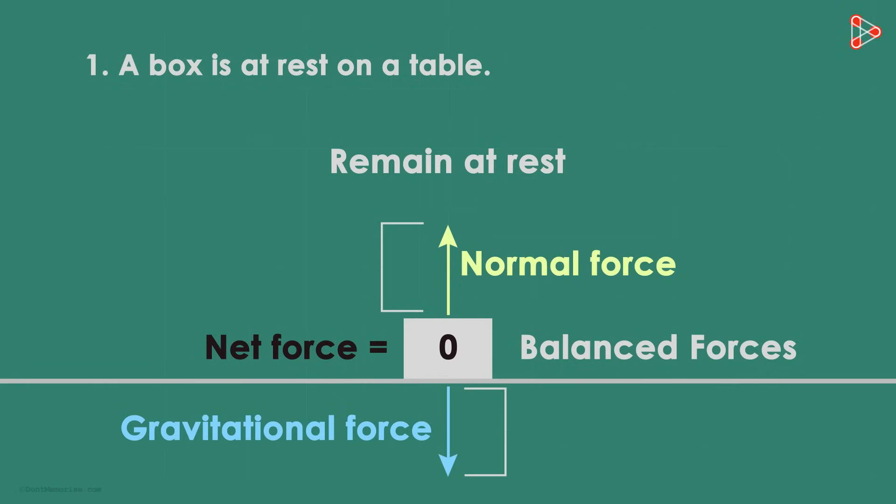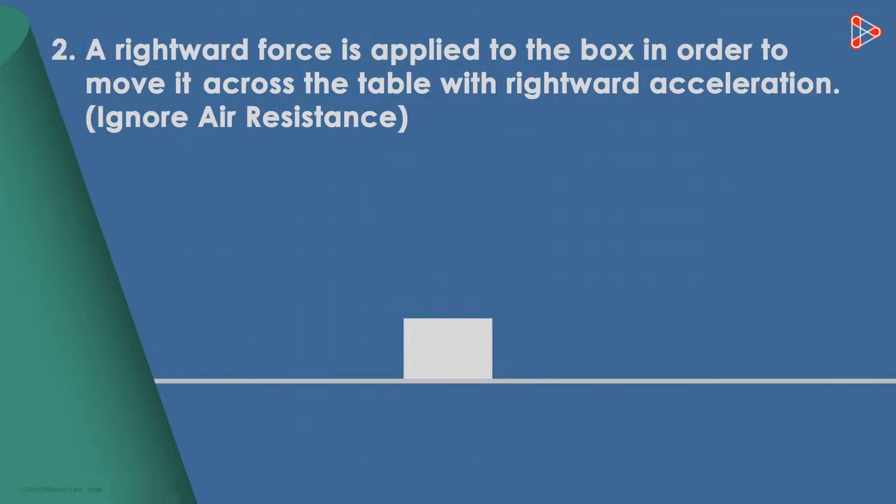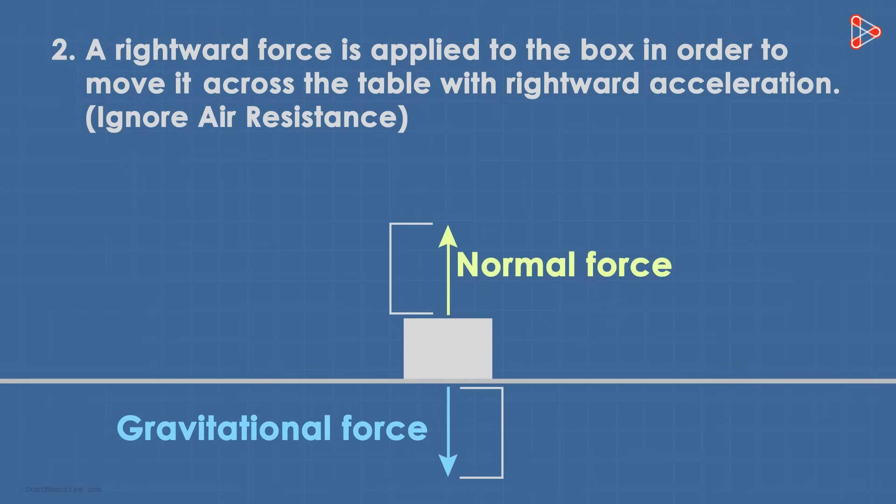Now why don't you try drawing the free body diagram for the second situation. Read it well. First things first, the force of gravity will exist and pull the box in the downward direction. As it's placed on the table, there will be an equal and opposite normal force acting upwards.